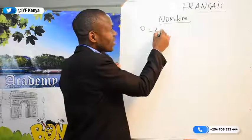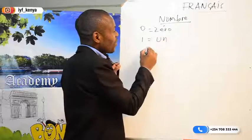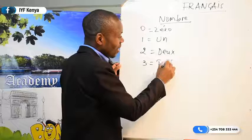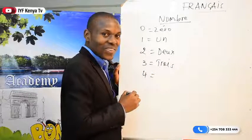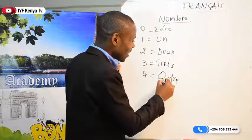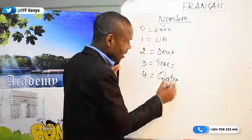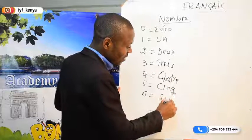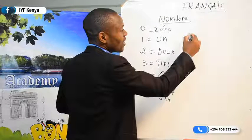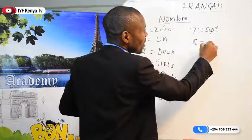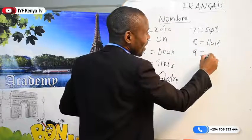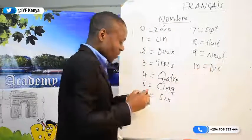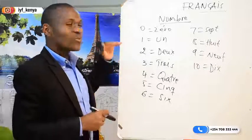This is how we write 'nombre' in French. We have zéro, then un, then deux, then trois, then quatre — written q-u-a-t-r-e — then cinq, c-i-n-q, then six, then sept, then huit, then neuf, and finally dix. So this is the way you are supposed to count in French from zero to ten.